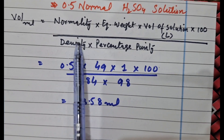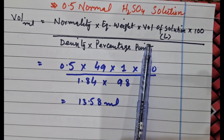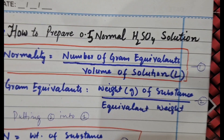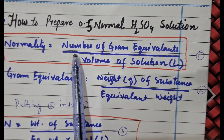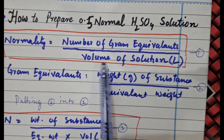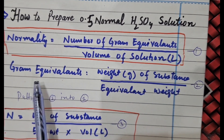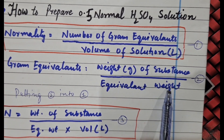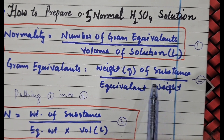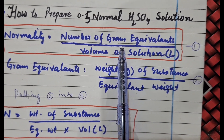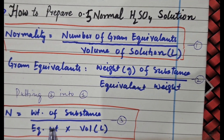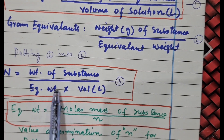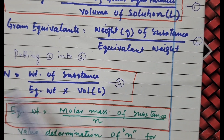Now, you might be wondering what sort of expression this is to prepare a normal solution. Let me show you how I have derived this expression. Normally the equation you are familiar with regarding normality is: normality equals number of gram equivalents divided by volume of solution in liters. Gram equivalents are actually weight in grams of a substance divided by equivalent weight. Substituting equation 2 into equation 1, normality is equal to weight of a substance divided by equivalent weight into volume in liters.